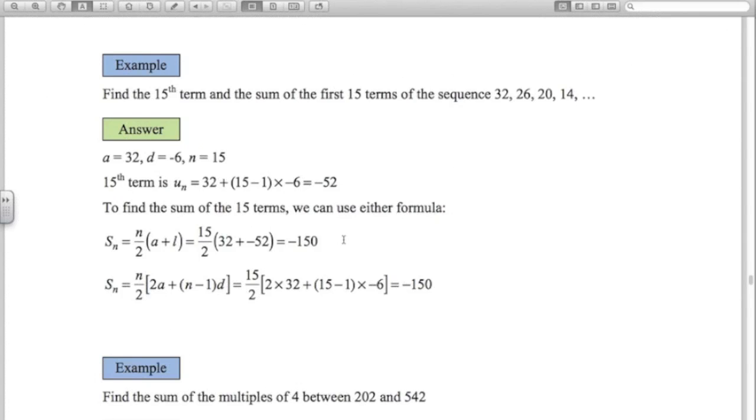To find the sum of the first 15 terms, I can use either formula. The first term is 32, the last term we just worked out is negative 52, and n is 15. Or we could just use this formula here which doesn't require us to know what the last term is. Substitute the values in carefully. The sum of the first 15 terms is negative 150.